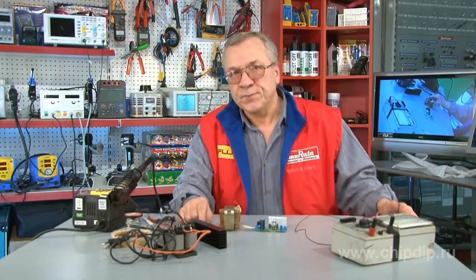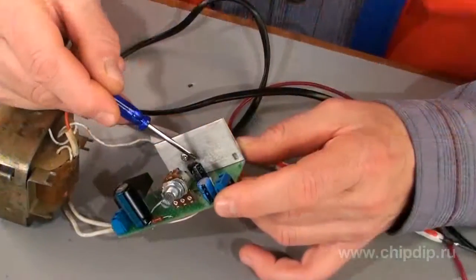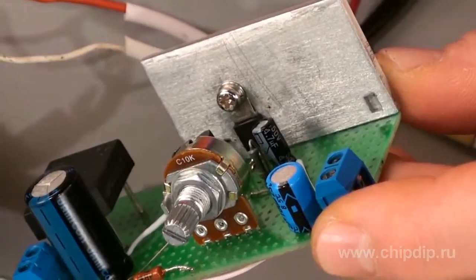An example of this is a simple high current voltage stabilizer based on the powerful field effect transistor IRLR2905.